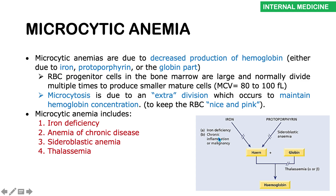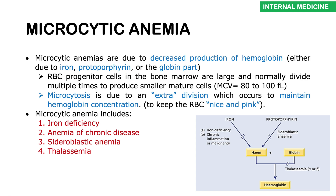In anemia of chronic disease, when there's an inflammatory process or infection, iron is stored away from the bloodstream, leaving very little iron for erythropoiesis — leading to microcytic anemia. If there's a deficiency in enzymes needed for protoporphyrin ring synthesis, like ALAS and ALAD, you get sideroblastic anemia. If there's a problem with the globin chains — alpha or beta — you develop thalassemias. So the four types of microcytic anemia are: iron deficiency, anemia of chronic disease, sideroblastic anemia, and thalassemias.